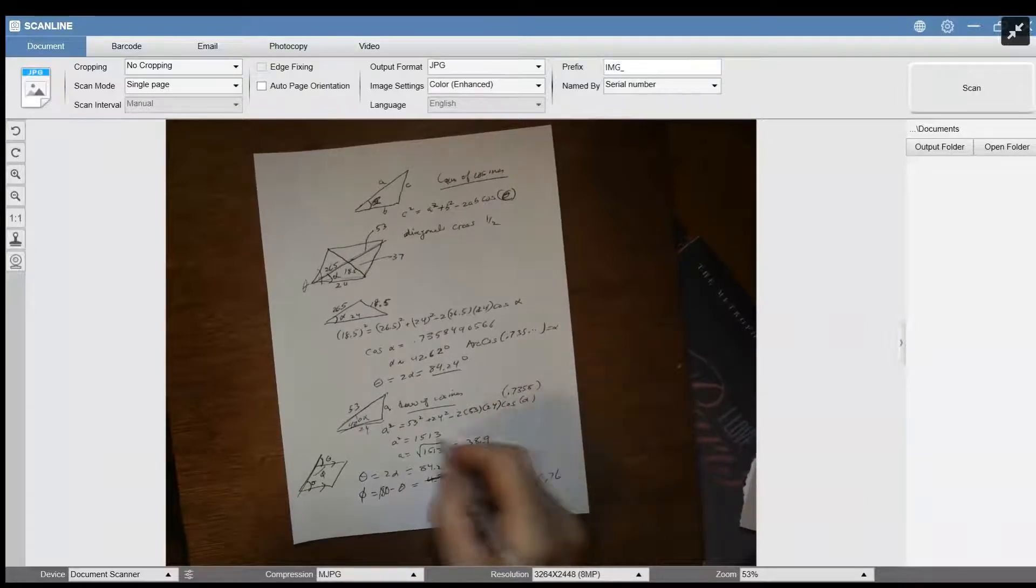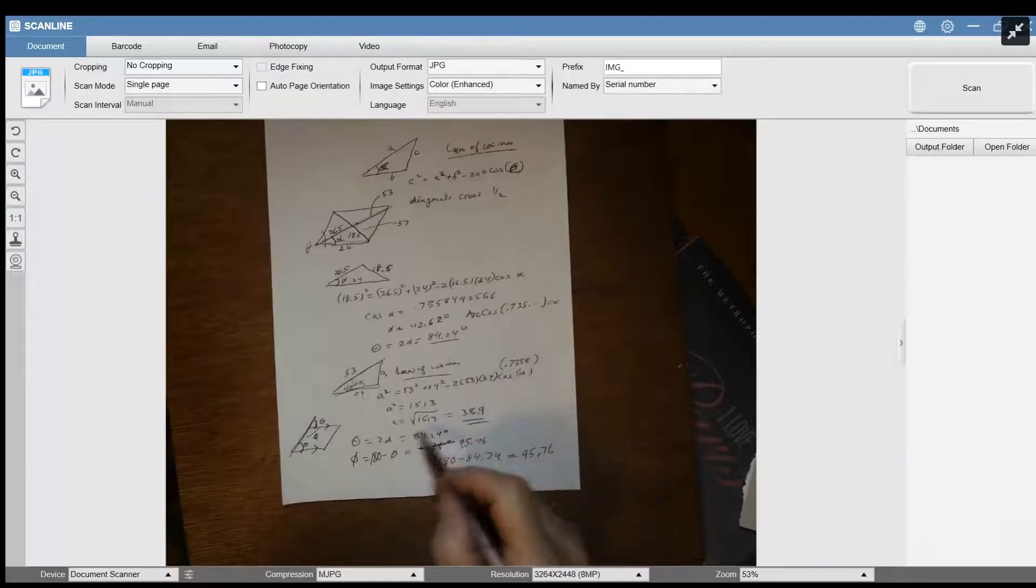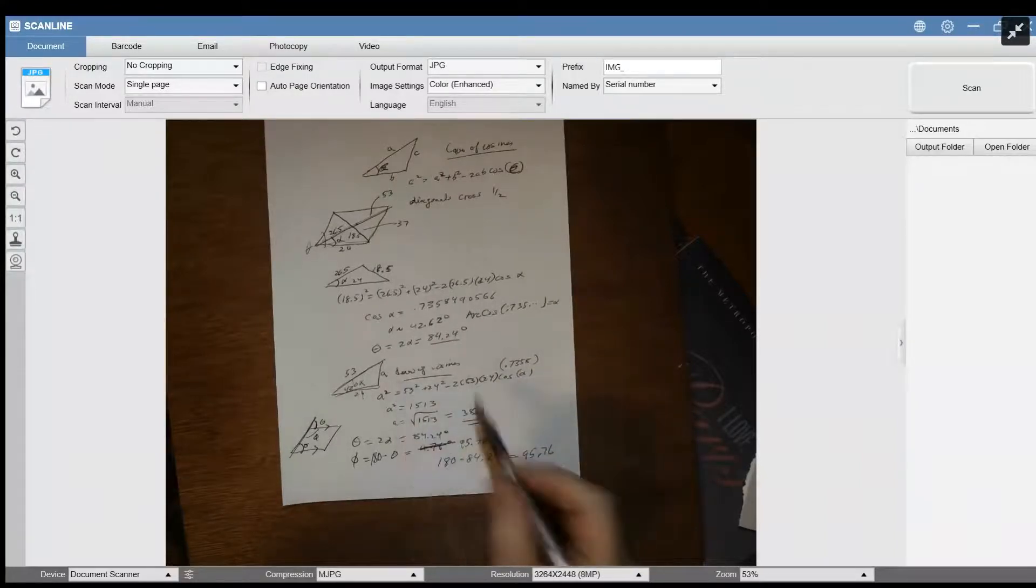If you do this calculation, you'll see a squared is apparently 1513. I'm not going to check these results, but this is basically how you do it. Take the square root, you get 38.9, so that's what I'm getting a to be.